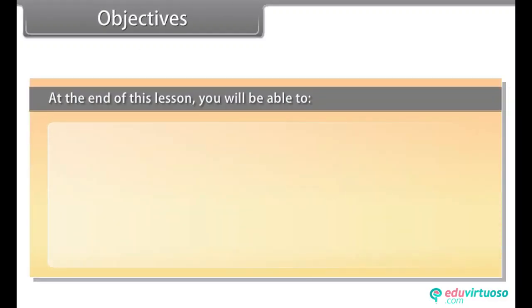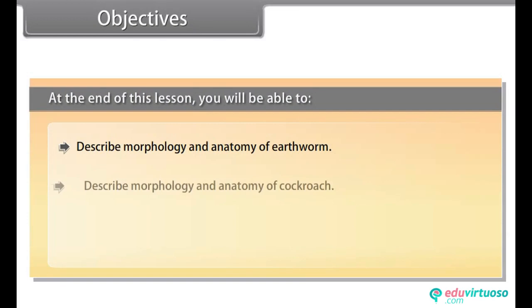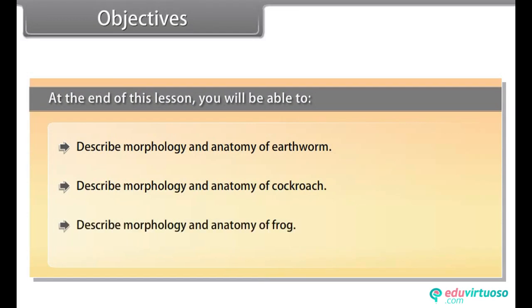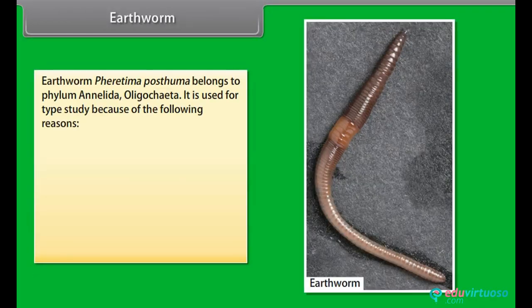At the end of this lesson, you will be able to describe morphology and anatomy of earthworm, describe morphology and anatomy of cockroach, and describe morphology and anatomy of frog. Earthworm — Pheretima posthuma belongs to phylum Annelida, oligochaeta.